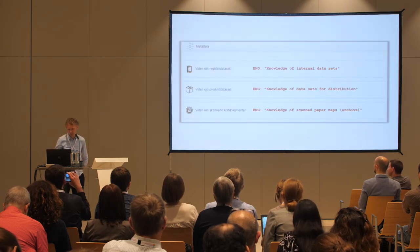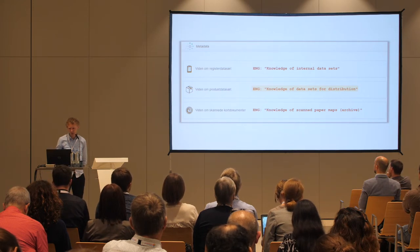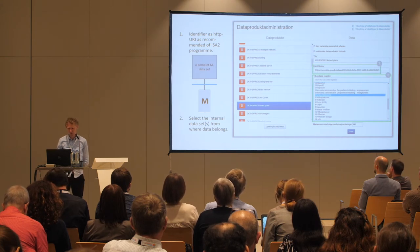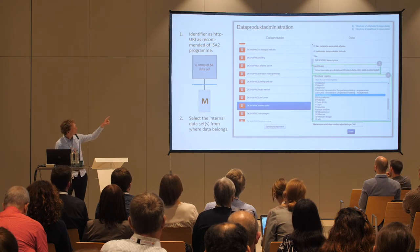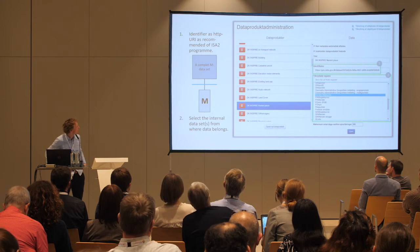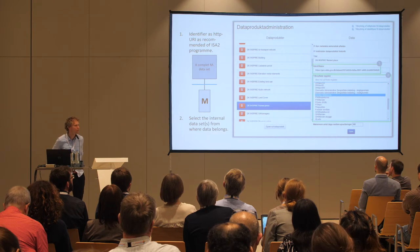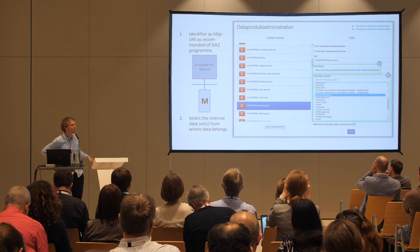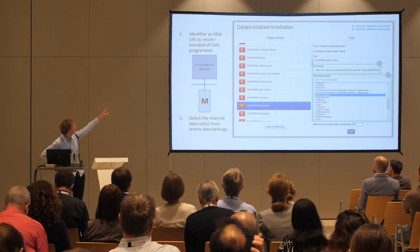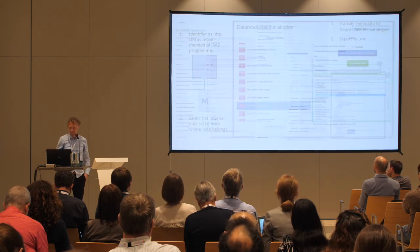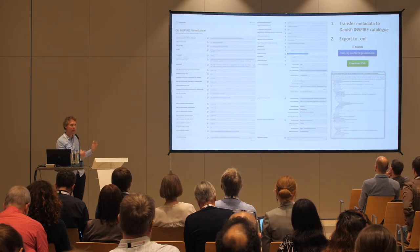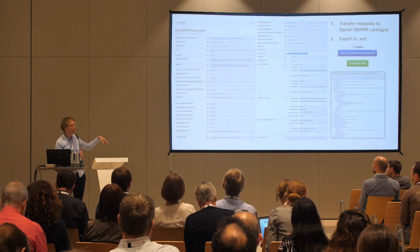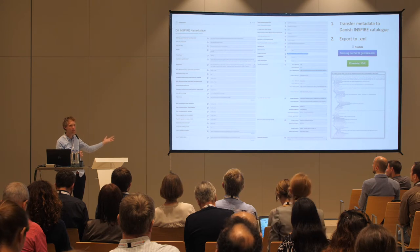In the administration module for the dataset for distribution, I'll highlight that this is where the dataset gets its spatial dataset identifier expressed as an HTTP URI — following the recommended pattern from the ISA² programme. We also have to choose which registry this data product belongs to. The system also has the function that a metadata responsible does not start from scratch — you select the registry the dataset belongs to, and all the metadata from that registry is inherited into this metadata. Then from there, we follow the INSPIRE metadata regulation — INSPIRE metadata plus more, because the ISO metadata standard offers many opportunities.